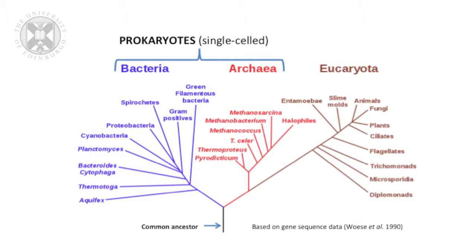Another domain is called archaea. Archaea are made up of some of the organisms that live in the most extreme environments on Earth, such as microbes that live in hot springs in the deep oceans or in volcanic springs. And then on the right of that diagram you can see the eukaryotes. Eukaryotes include all multicellular life, such as animals, plants, and some fungi, but also some single-celled organisms such as algae that live in the oceans.